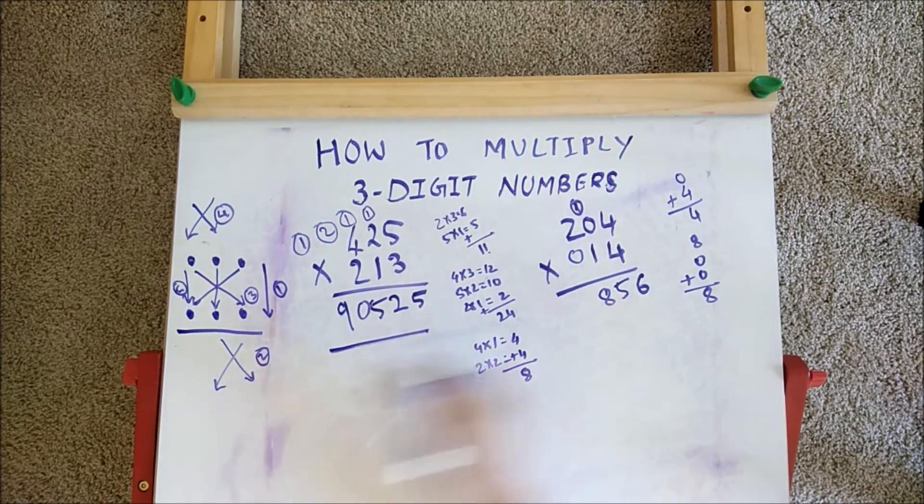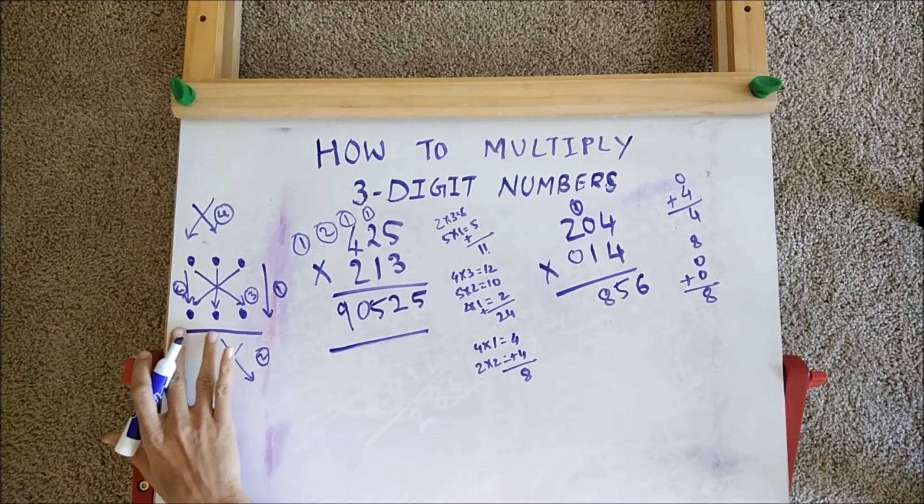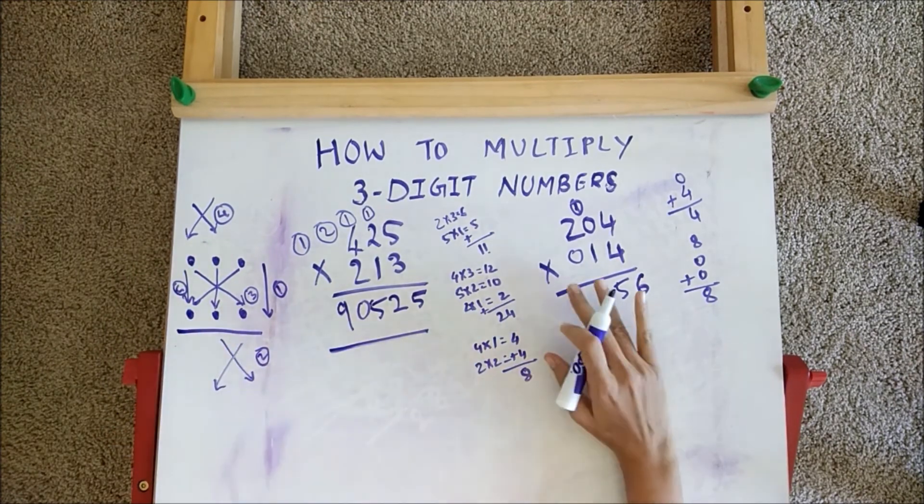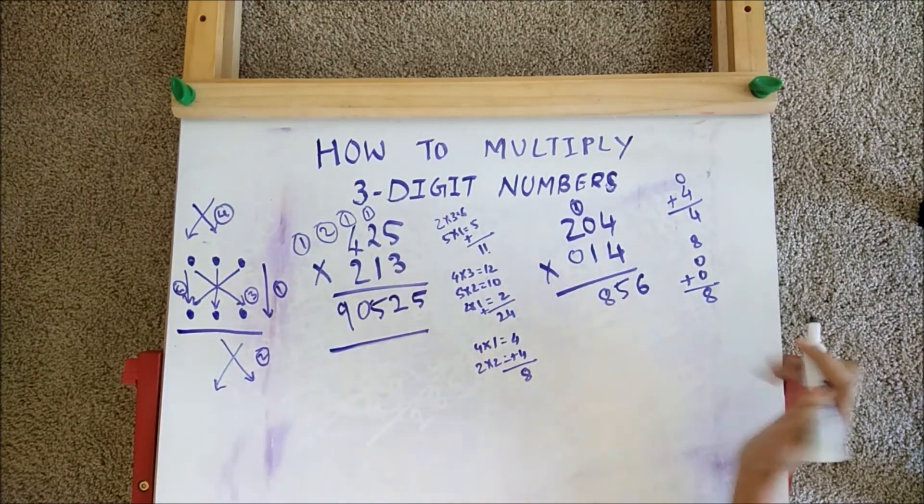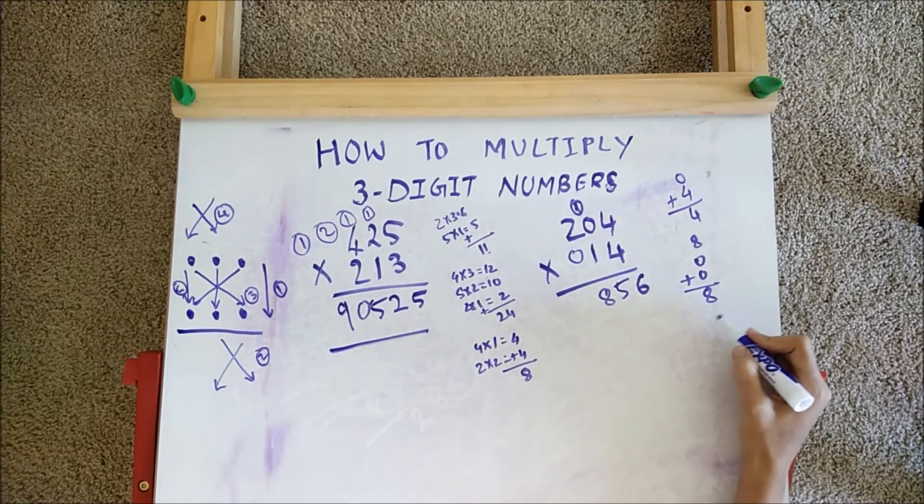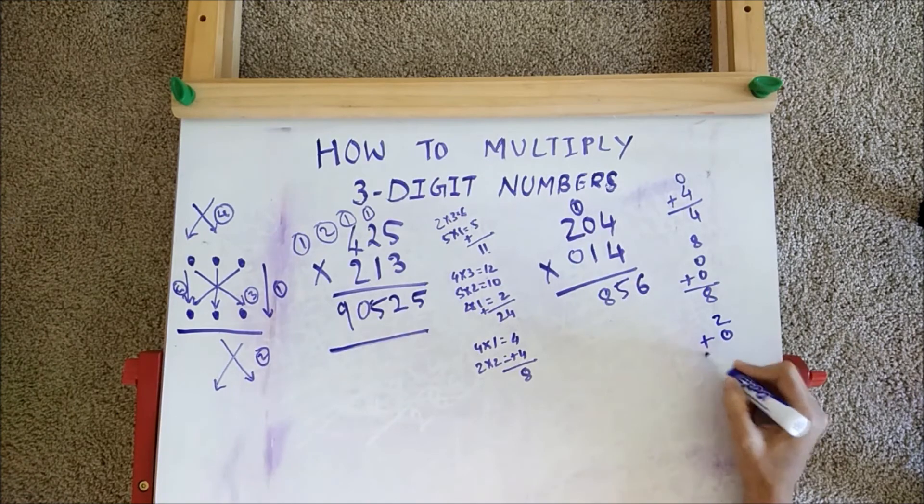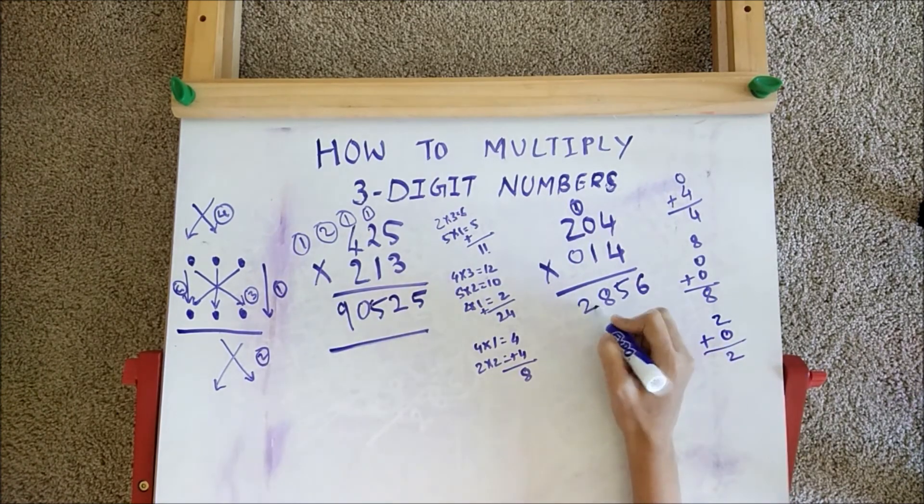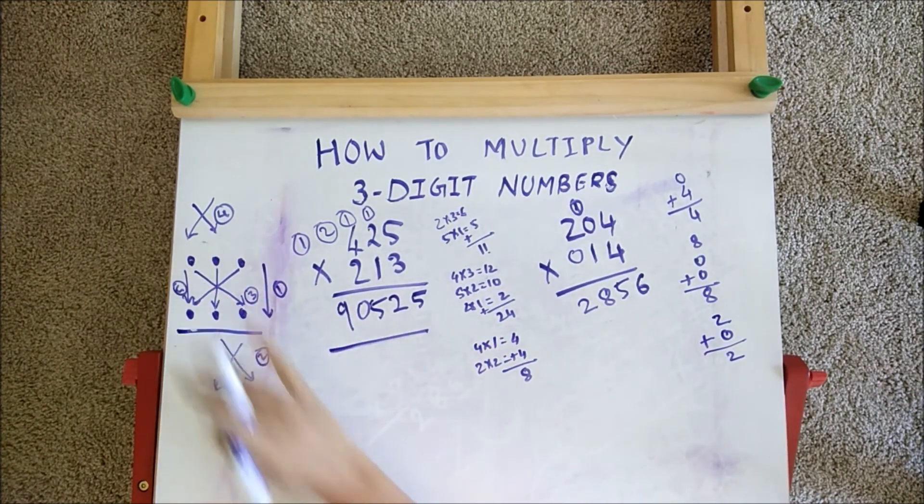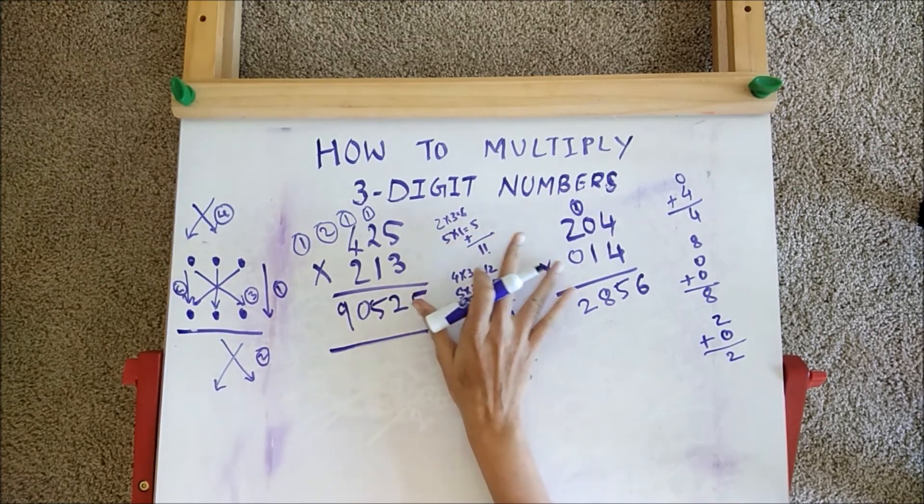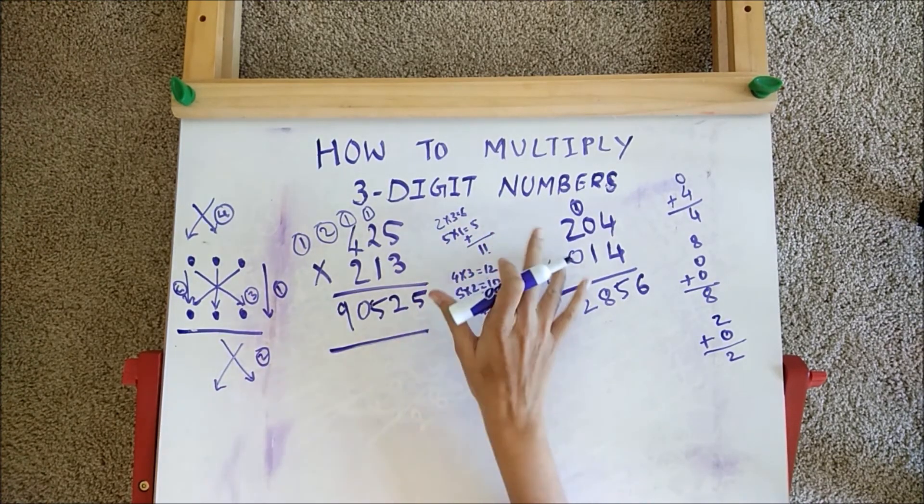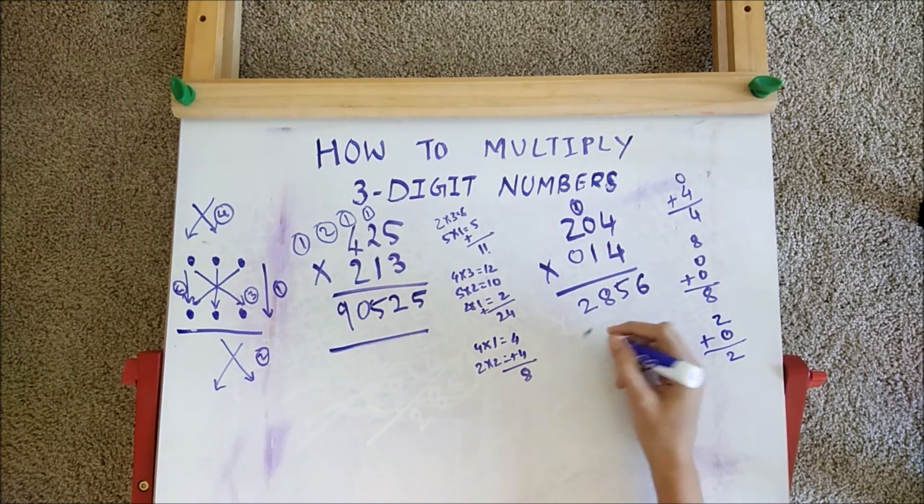In step 4, we cross multiply these two digits. 2 times 1 is 2, 0 into 0 is 0, adding we get 2. In the last step, we multiply the number at the hundredth place. But it is 0, so 2 into 0 is 0. Our final answer is 2856.